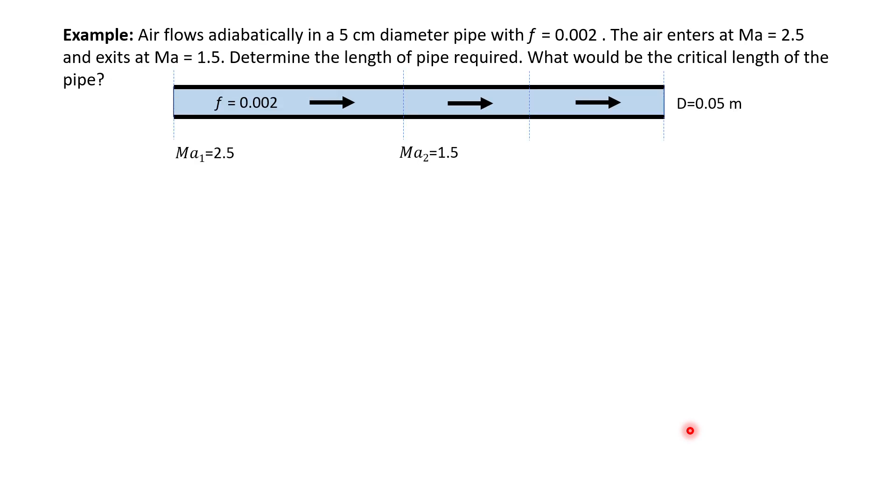So this is the basic illustration. You have the fluid enter at Mach number 2.5. The diameter of the pipe is 5 cm. And the friction coefficient is 0.002. So for the first question you have a condition that Mach number is equal to 1.5. So what will be this length? Basically that's the question.